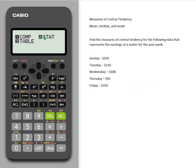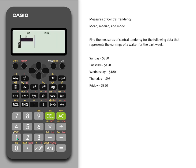We're going to go into Mode and choose Statistics, because you want to enter it as a list. When I hit 2, it asks for a couple choices, and we're interested in the one variable statistics, so we choose number 1. It brings up a list, and now we enter our data.